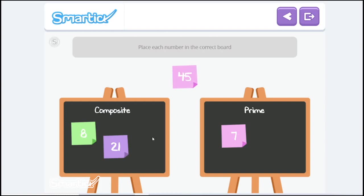45. That one's also composite. It has more than one factorization. 45 and 1, and 5 and 9. So let's move it to the composite side.